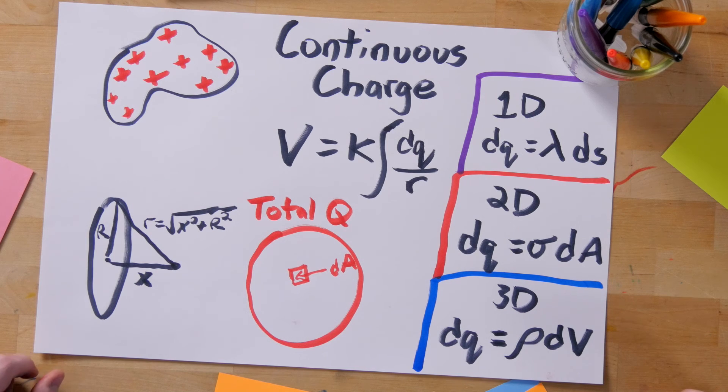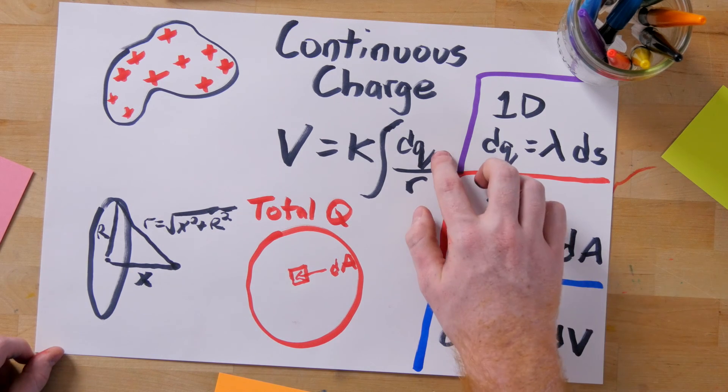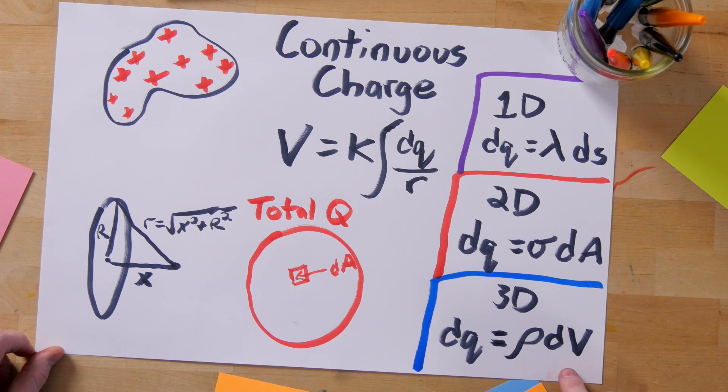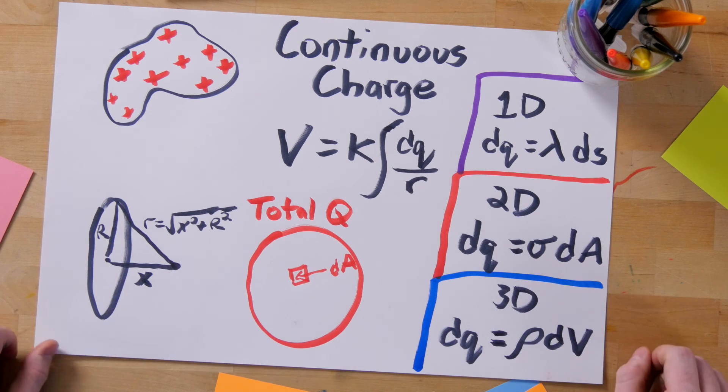With these broad steps in mind, revisit the examples we gave in lecture. All it takes is identifying your equation for dq and figuring out your equation for r. After that, it's just some incredibly fun calculus, and you're done.